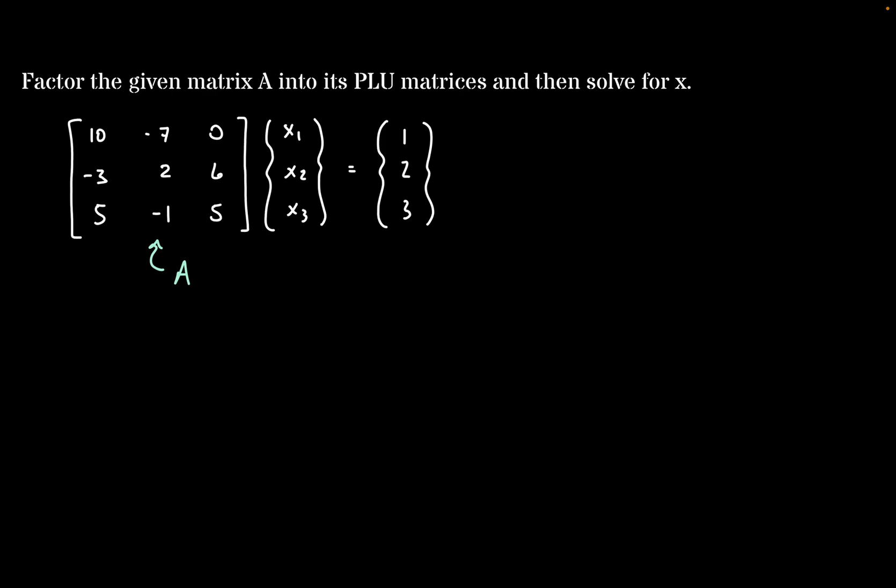Today we're going to be learning how to use PLU factorization to solve a system of equations. We're given a matrix A, a vector x, and a vector b. What we want to do is split up A into its three matrices: the P matrix or pivot matrix, the L matrix or lower triangular matrix, and the U matrix or upper triangular matrix. Then we'll use those three matrices to solve for the vector x.